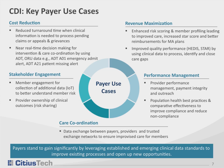Stakeholder engagement: payers often have siloed organizations in terms of how the communication is going out to external entities. Provider abrasion and member abrasion can be caused by multiple outreach campaigns. How do you coordinate those and communicate those? The care coordination between entities — often the payer is the only one that knows that care has happened in one setting and should be happening in another setting. How do you help providers to exchange data and information so the right care happens at the right points in time?